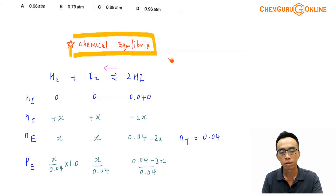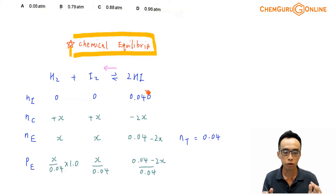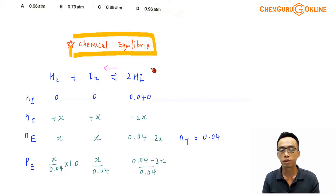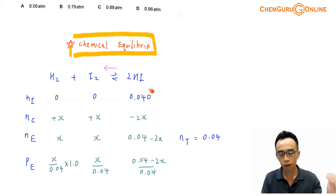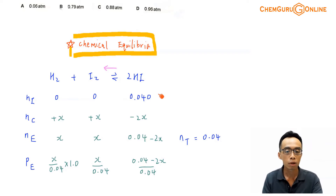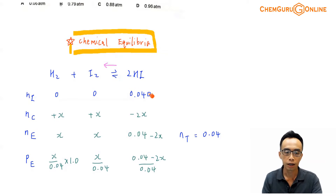The information we have is that we start off with 0.040 moles of HI. Notice that based on this equation, HI is the product, so it appears on the right-hand side. Since this is a reversible reaction, if we start off with the product, the reverse reaction will take place. So the initial number of moles of H2 and I2 will be 0, and the initial number of moles of HI will be 0.040.